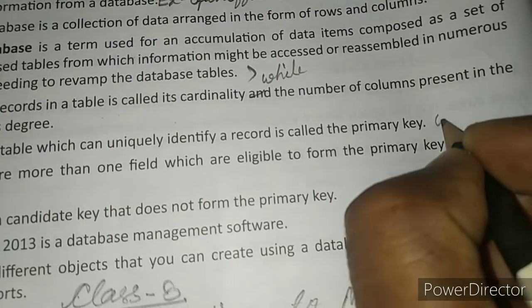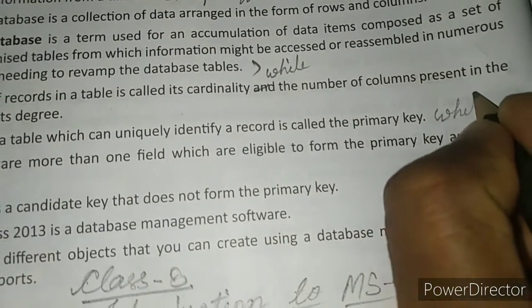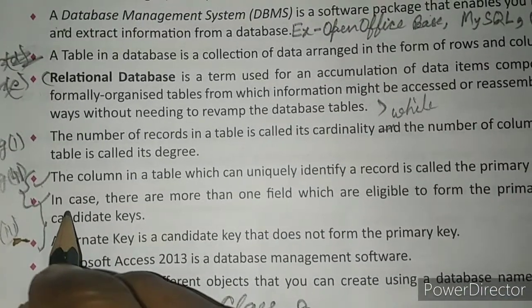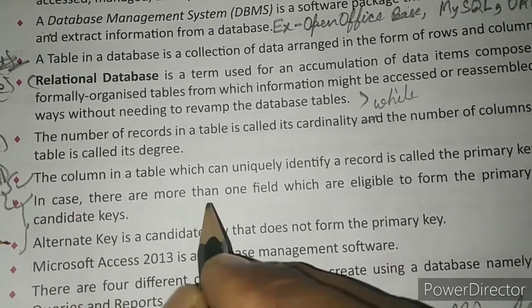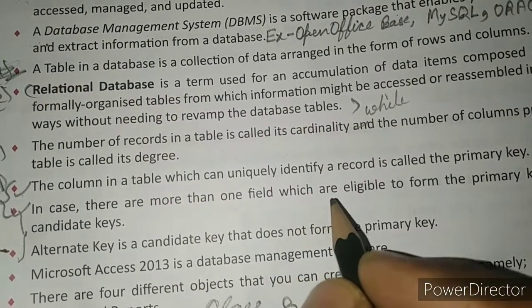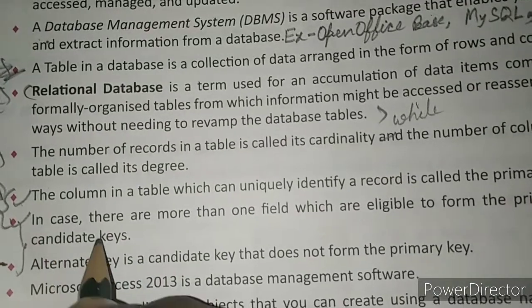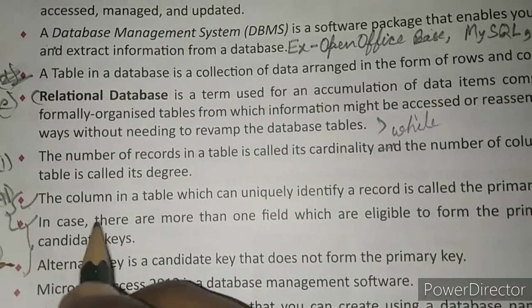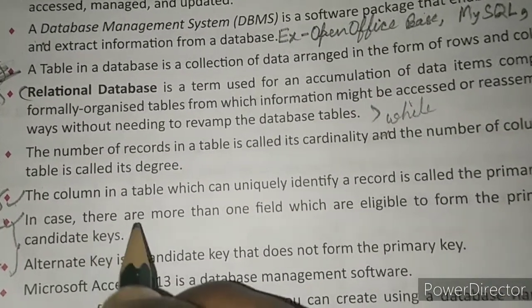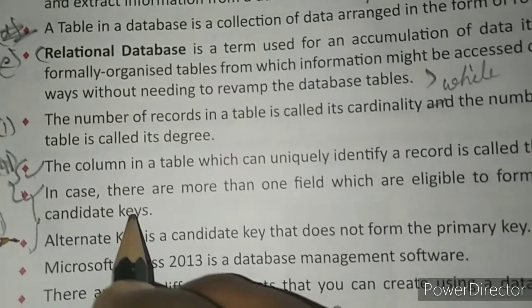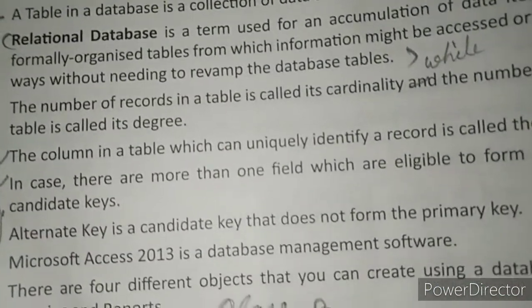After that write: while in case there are more than one field which are eligible to form the primary key, those fields are called candidate keys. This is how you can write the difference between primary key and candidate key.